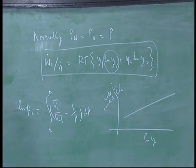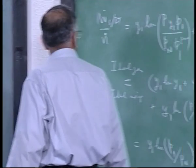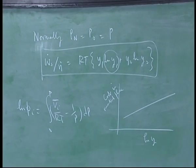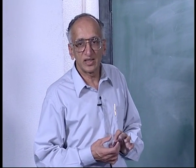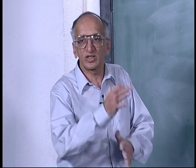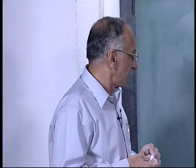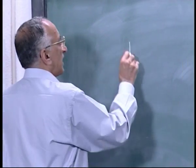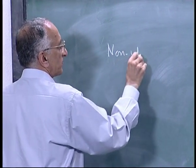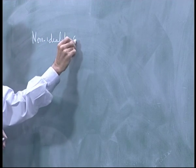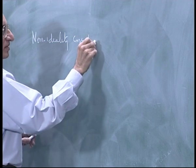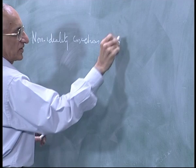So first point about separation work is this is the cost. To give you some idea, you can look at numbers. Notice that Ws dot by M dot will come out to be negative which means work is done on the system. Our convention is work done by the system is positive. So you have to do work to separate air into oxygen and nitrogen.